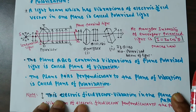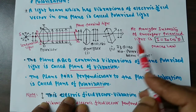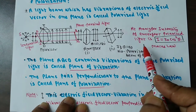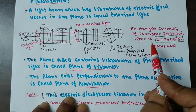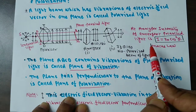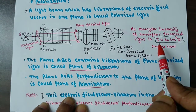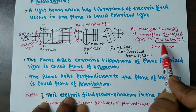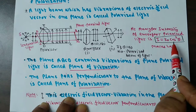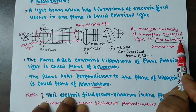Now, what is the intensity of plane polarized light? The intensity of plane polarized light is given by I equal to I₀ cos² θ.